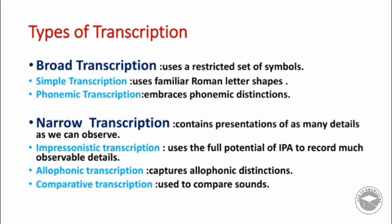The second type is narrow transcription, which contains representations of as many details as we can observe. This includes impressionistic transcription, which uses the full potential of the IPA to record observable details, and allophonic transcription, which captures allophonic distinctions. There is also comparative transcription with many details that allow us to differentiate one sound from another. This concludes all phonetics lessons — the next video will be the exam review. Thank you for watching.